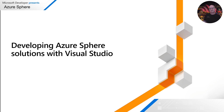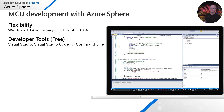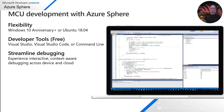I'm going to switch gears now and talk about building applications for Azure Sphere. You can build applications from Windows 10 Anniversary Edition or better, and from Ubuntu 18.04. The developer tools are free. On Windows I recommend Visual Studio 2019, but you can also use Visual Studio Code or the command line. On Ubuntu you can use Visual Studio Code or the command line. There's a very powerful integrated debugging environment both for high-level applications and for real-time applications.